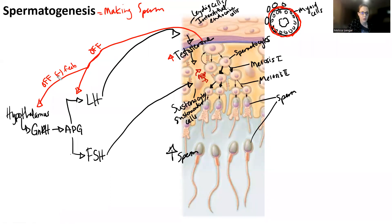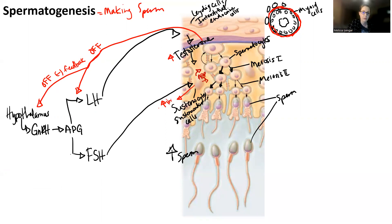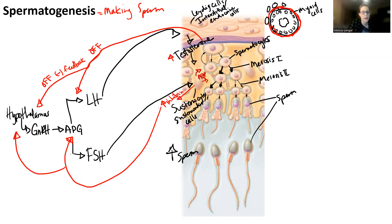Remember, negative feedback decreases our stimulus. If we have an increase in testosterone, then we have a negative feedback to decrease testosterone. The other thing that happens is the sustentacular cells also start to release inhibin. So as sperm count increases, you have an increase in inhibin as well as testosterone, and inhibin feeds back to turn off the anterior pituitary gland and the hypothalamus.